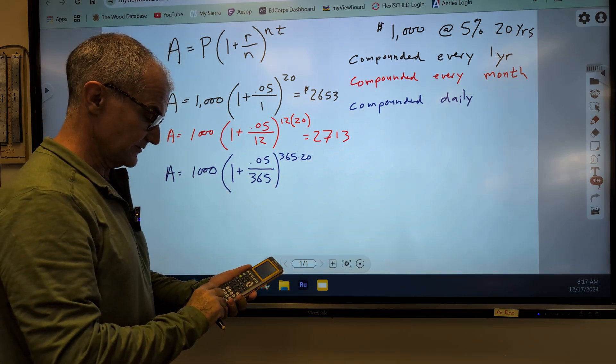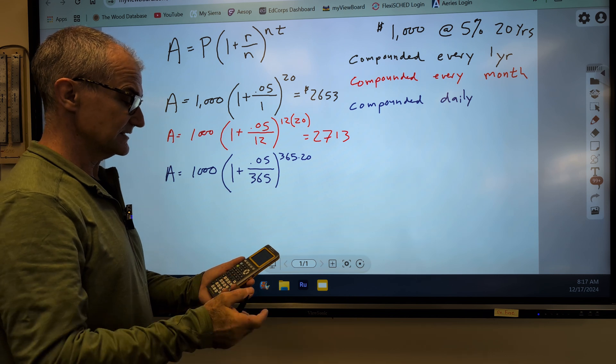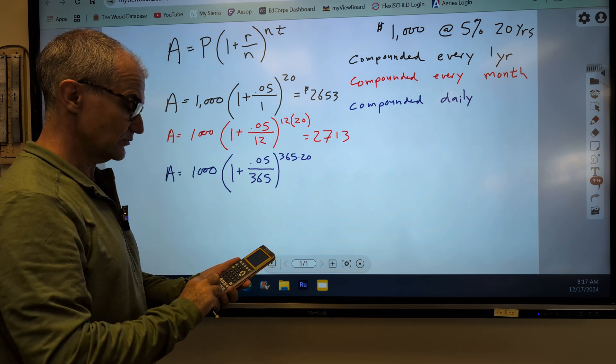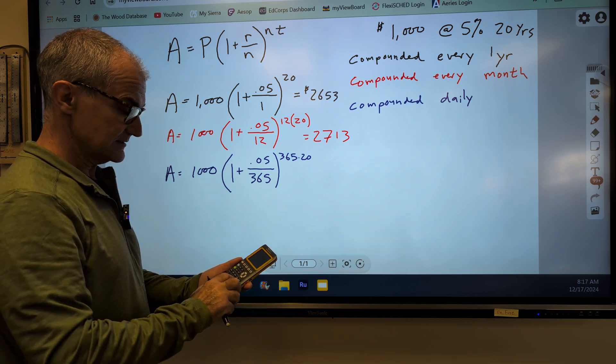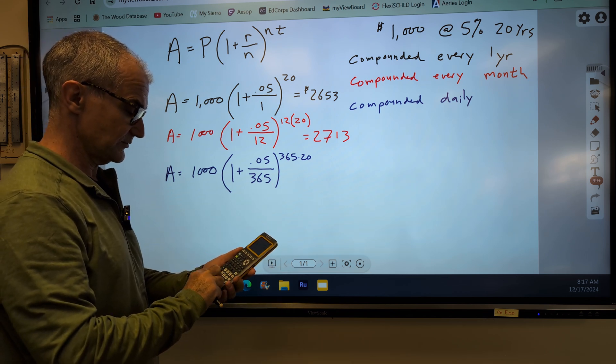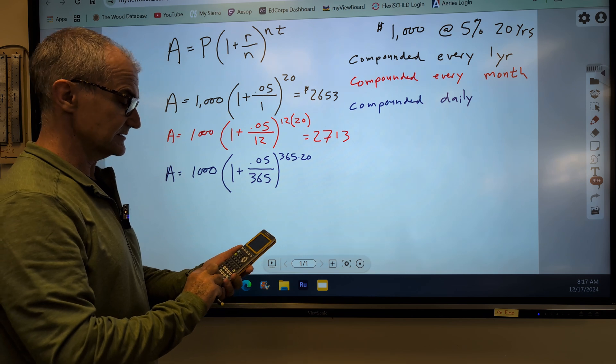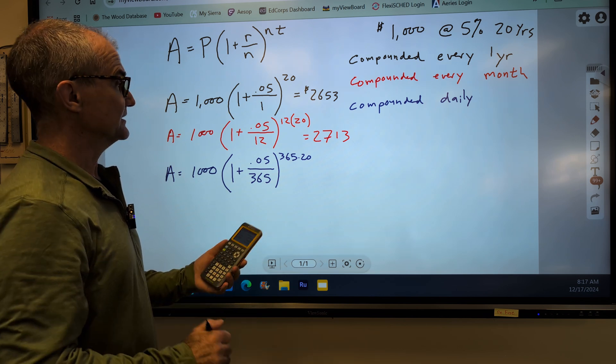And again, I'm going to go .05 divided by 365, really teeny number, plus 1 to the power of, and now it's a giant number, 365 times 20 times my 1,000. And I get 2718.